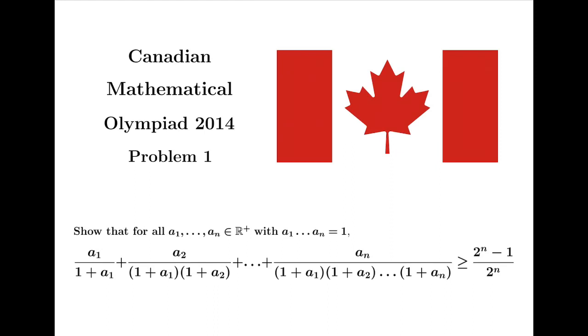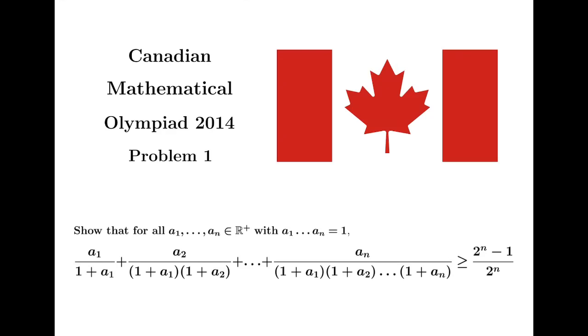the expression a1 over 1 plus a1 plus a2 over 1 times a1 times 1 plus a2, adding all the way to aN over the product of 1 plus a1, 1 plus a2, all the way to 1 plus aN, is greater than or equal to 2 to the n minus 1 over 2 to the n.